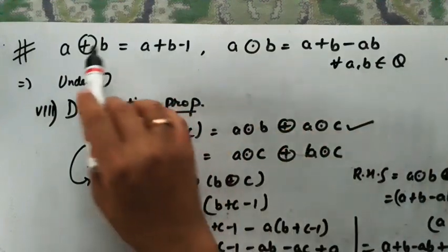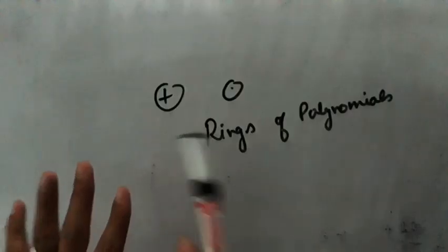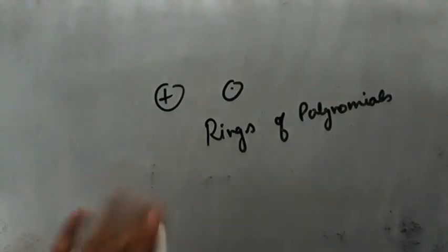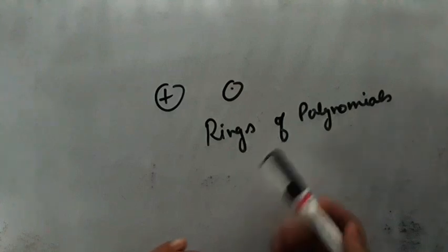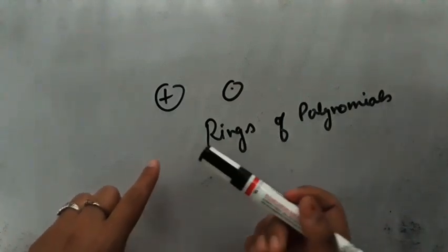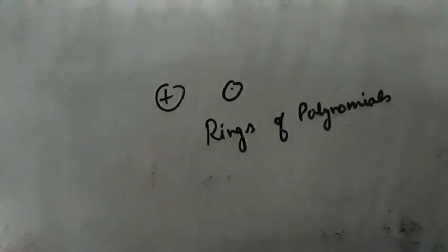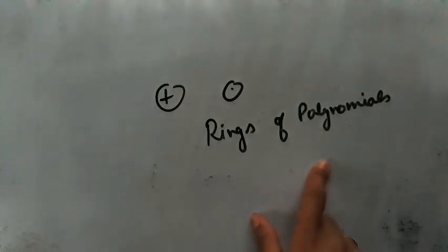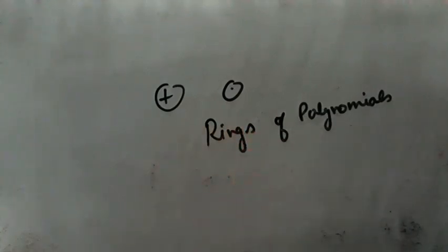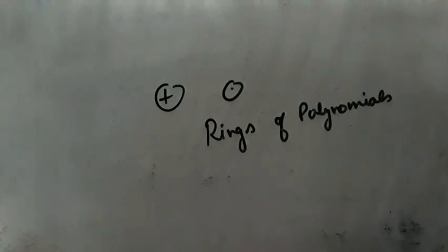Since all eight properties are satisfied, the set of rational numbers under these two binary operations forms a ring. We have covered Gaussian integers, matrices, and now custom binary operations for proving rings. In the next video we will study rings of polynomials. Until then, practice these questions. Thank you.